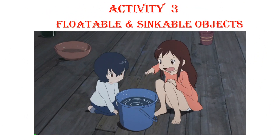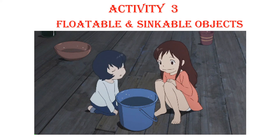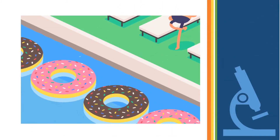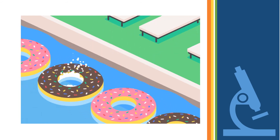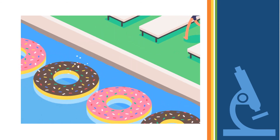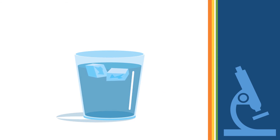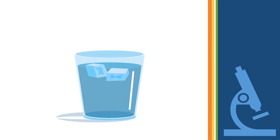Let's perform another activity with floatable and sinkable objects. Take a glass of water and put some ice cubes into it. The ice cube floats on water because the density of the object is lower than the density of water.